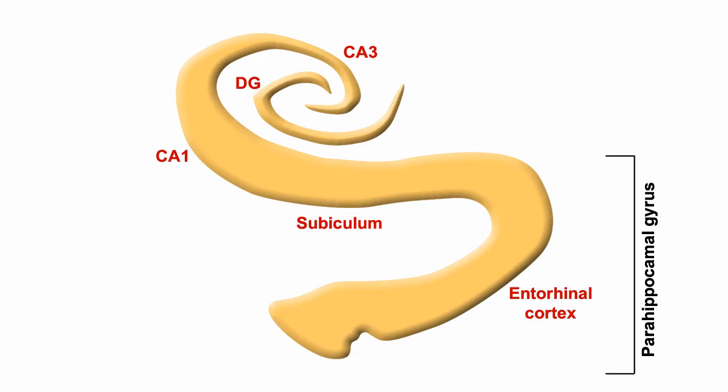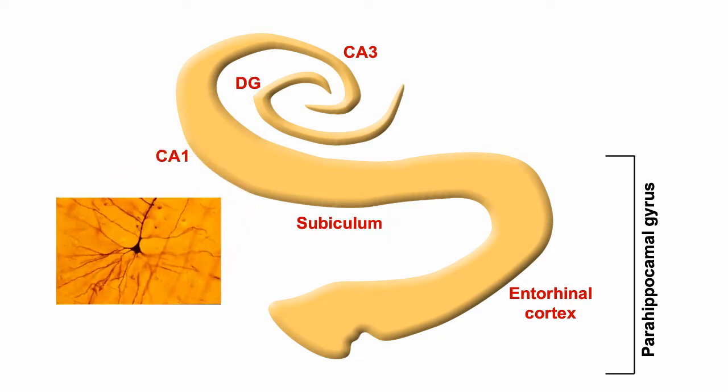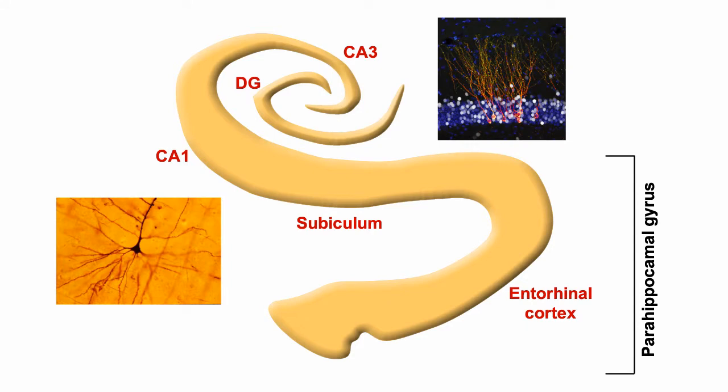The subfields are made up of mostly excitatory pyramidal neurons, while the dentate gyrus is composed mainly of excitatory granule cells.